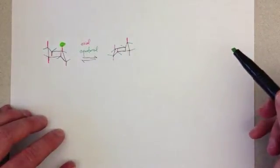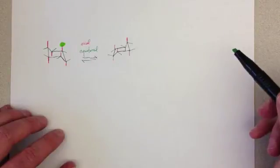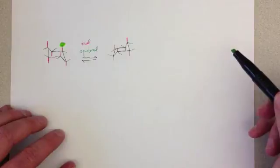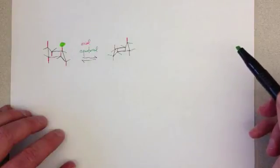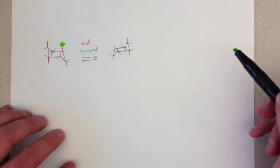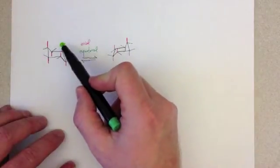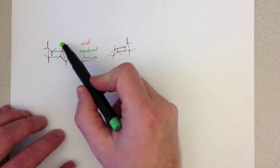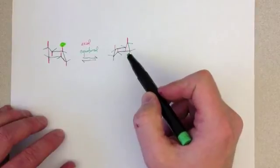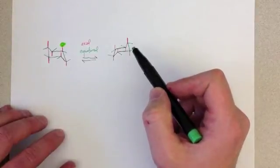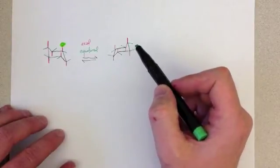Well, the easy rule is that it stays on the same side of the ring. It just moves from axial to equatorial or equatorial to axial position. So if I have a bulky substituent that's axial up, it's going to remain up when the ring flips, but it will move to an equatorial position.